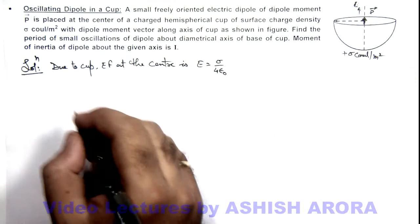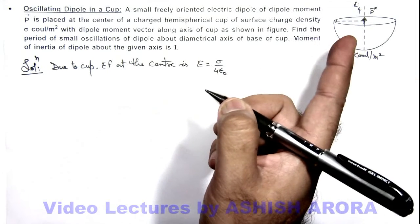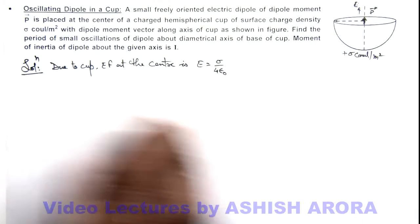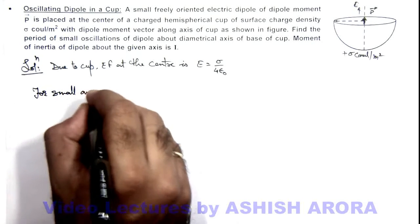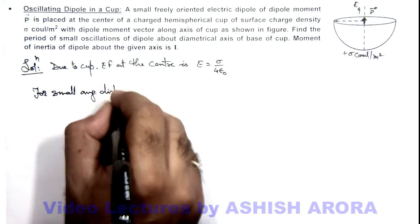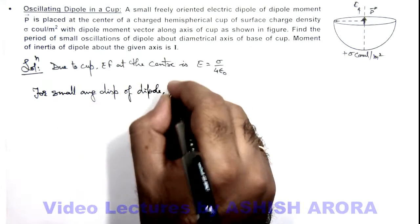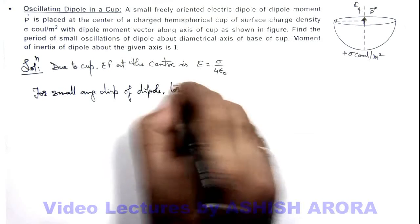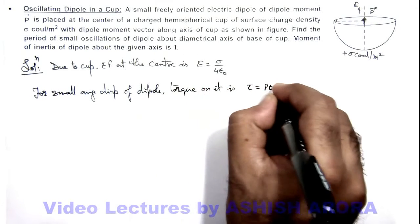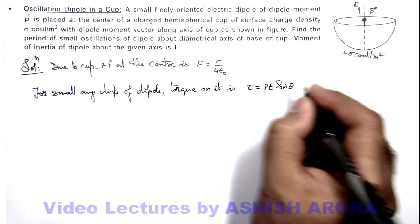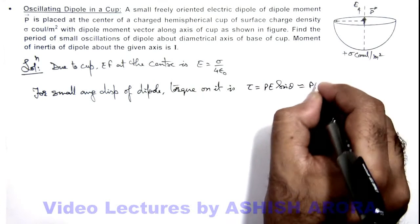If we calculate the torque on this dipole due to its small displacements, we can calculate for a small angular displacement of the dipole. The torque on it is the value of torque, which we can write as p E sine theta, and for a small angular displacement that will be approximately written as p E theta.